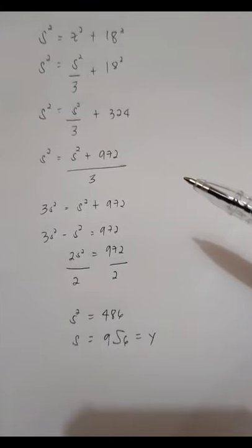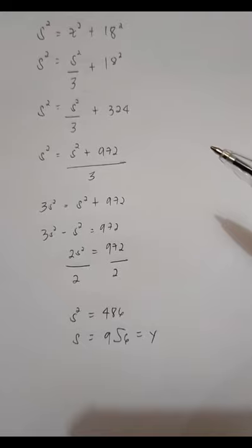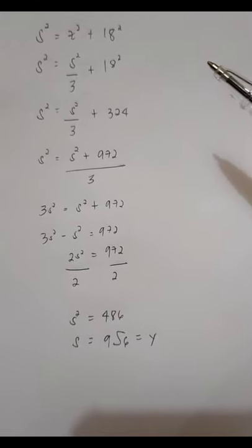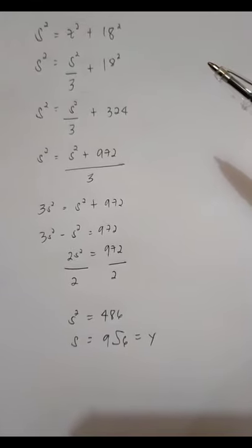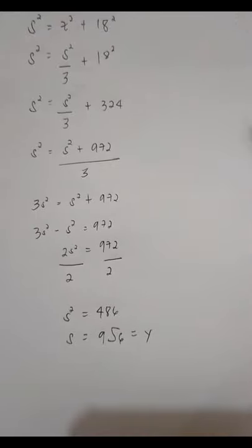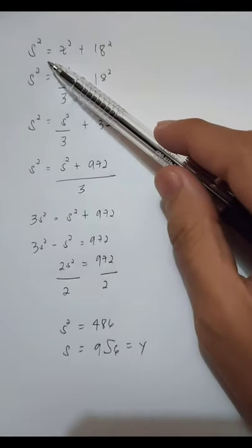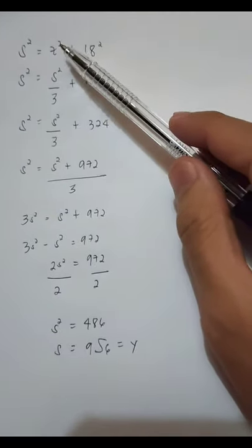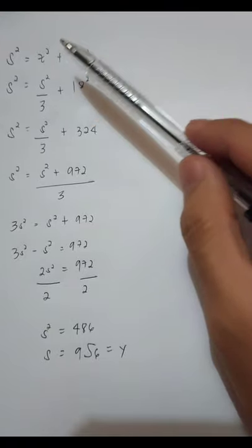Now, we know that in a right triangle of Pythagorean theorem, C squared equals A squared plus B squared. That is, S squared is equal to Z squared plus 18 squared.